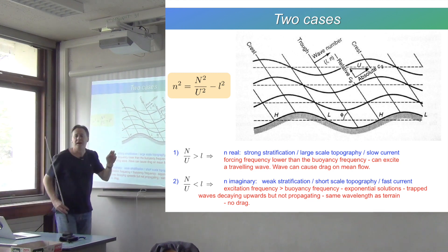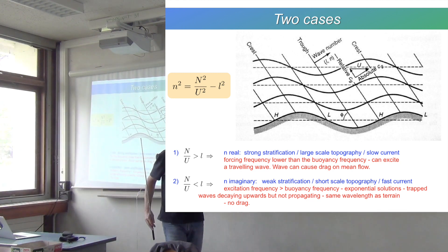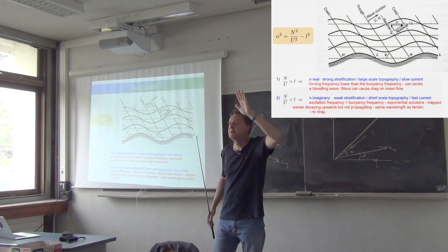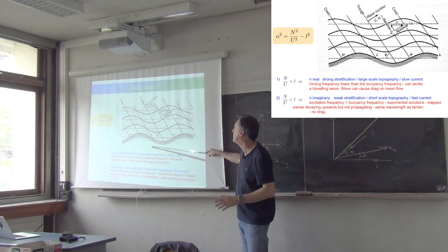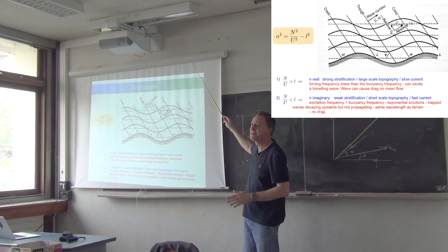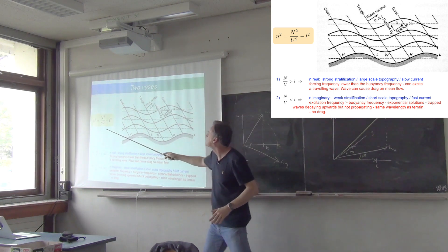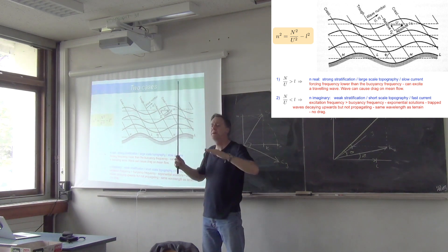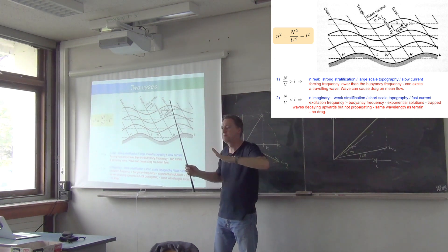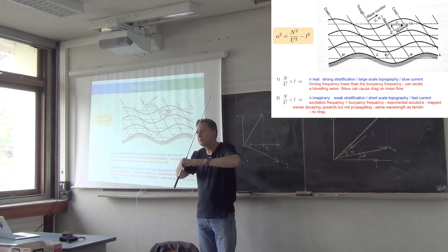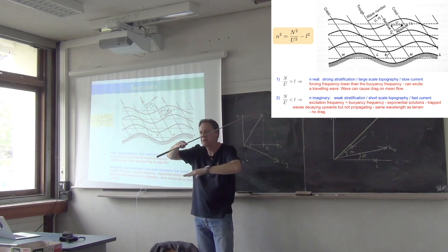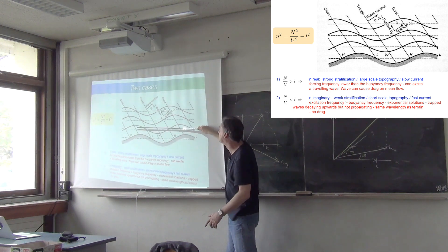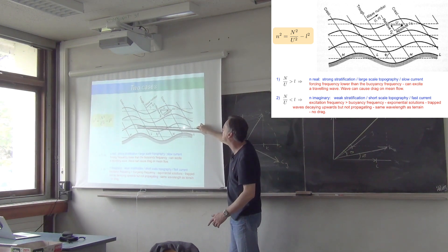If little n is real, that means you have vertically propagating waves, which means you have communication between the bottom and the rest of the ocean. If little n is imaginary, then you have exponential decay and you have all the wave oscillation activities trapped in a kind of exponential boundary layer. You don't have communication - your bottom boundary layer is cut off from the rest of the fluid.